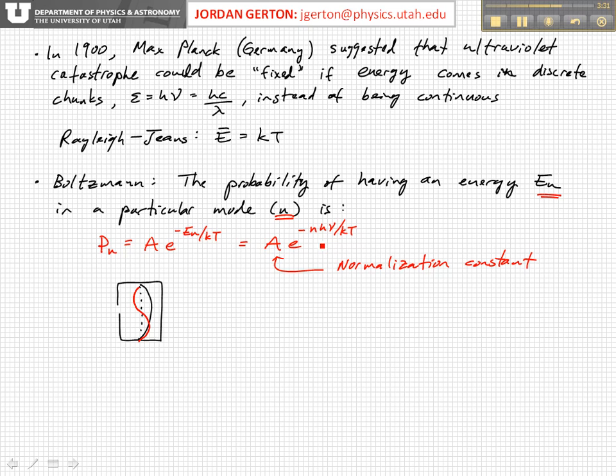So the next thing we have to do is to figure out what this normalization constant A is. Now, what does normalization mean in this context? Well, what it means is that if you integrate, or you sum over all the different modes, the energy has to be in one of the modes. So if you have some amount of energy, one of these modes, it has to be in one of the modes.